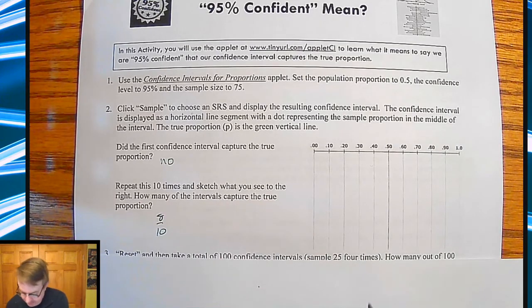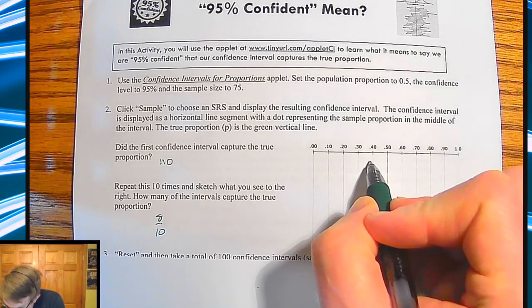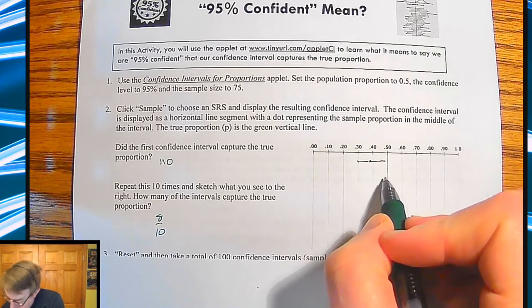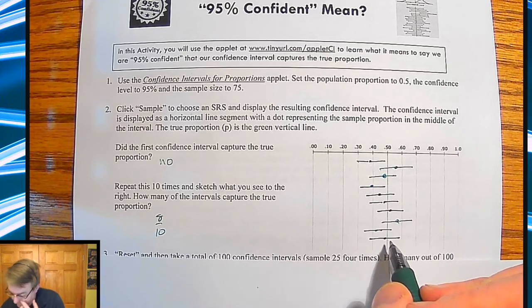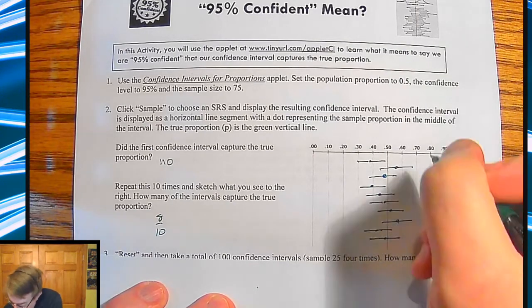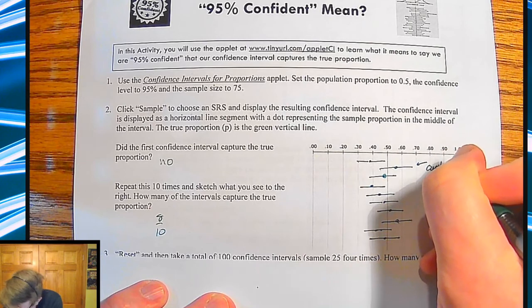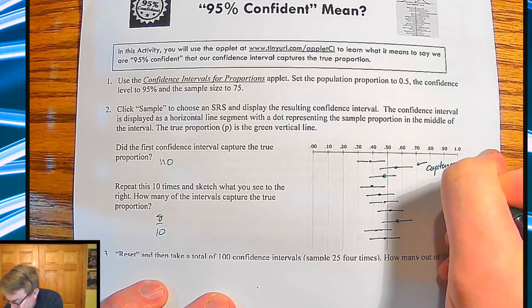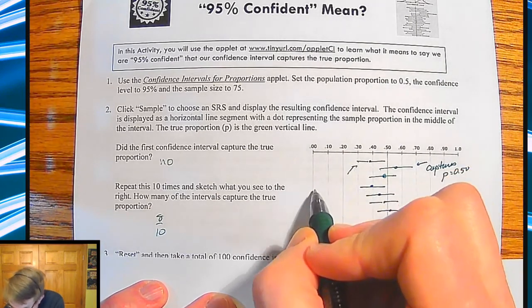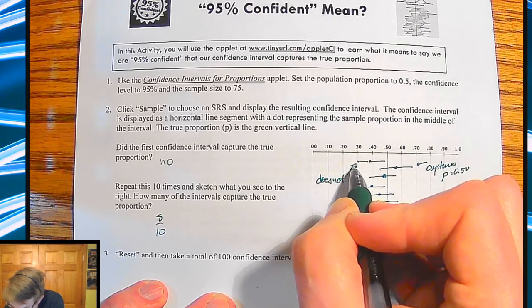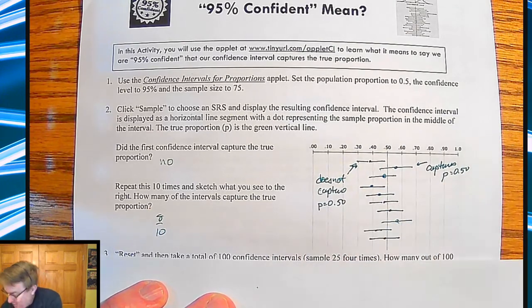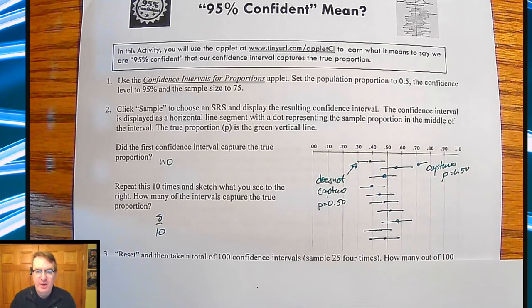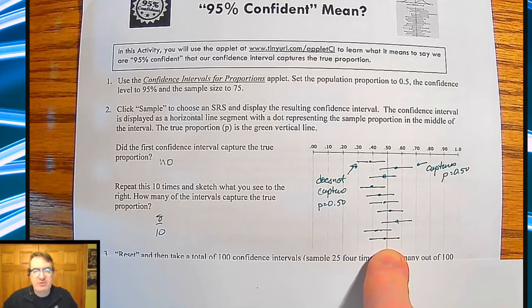So coming back here to our notes, it says, did the first confidence interval capture the true proportion? Mine was no, yours might be yes. And then repeat this 10 times, sketch to the right and how many intervals actually captures it. So I ended up with eight out of 10. And so when you do this, and I would encourage you to do this on your own, I'm going to go through and I'm going to go and match each of these. So like my first one was here. So if you look at this, like here, this one right here captures my P value of 0.50. This one here doesn't capture it. And that's the thing about your samples.